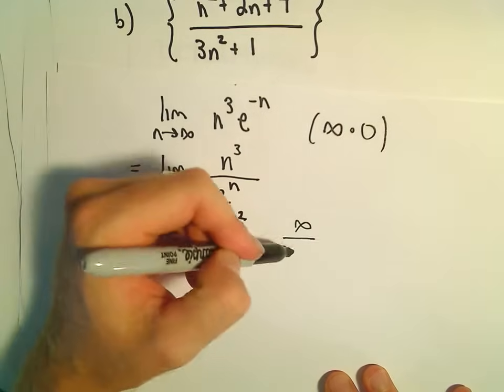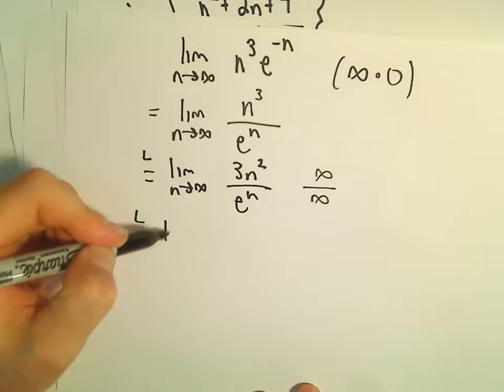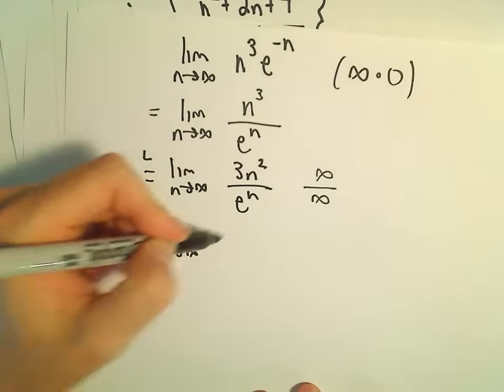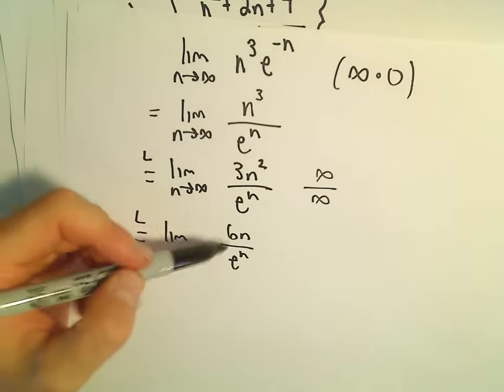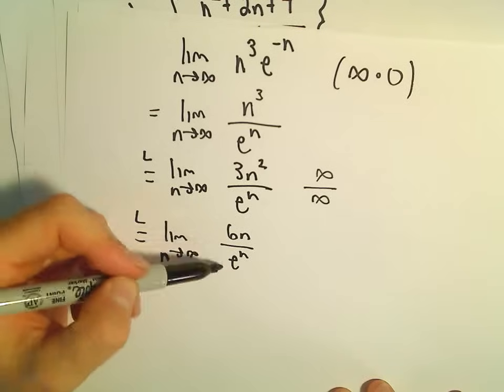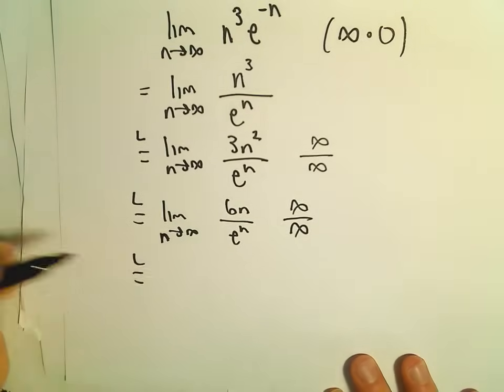This is still infinity over infinity, an indeterminate form. We can use L'Hopital's rule again. We'll get 6n over e to the n. Again, as n goes to infinity, both top and bottom will go to infinity. So we can use L'Hopital's rule one more time.